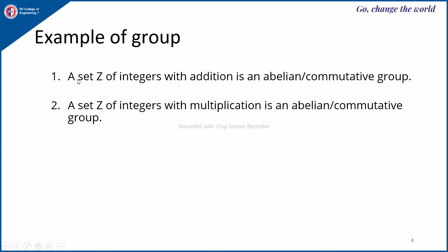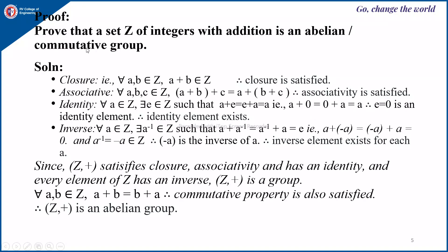Some examples: the set Z of integers with addition is an abelian or commutative group. Next, the set Z of integers with multiplication is also an abelian or commutative group. Now let us see how to prove that the set of integers with addition is an abelian or commutative group. Each of these four properties plus the commutative property we have to show that it is satisfied on the set of integers with addition.